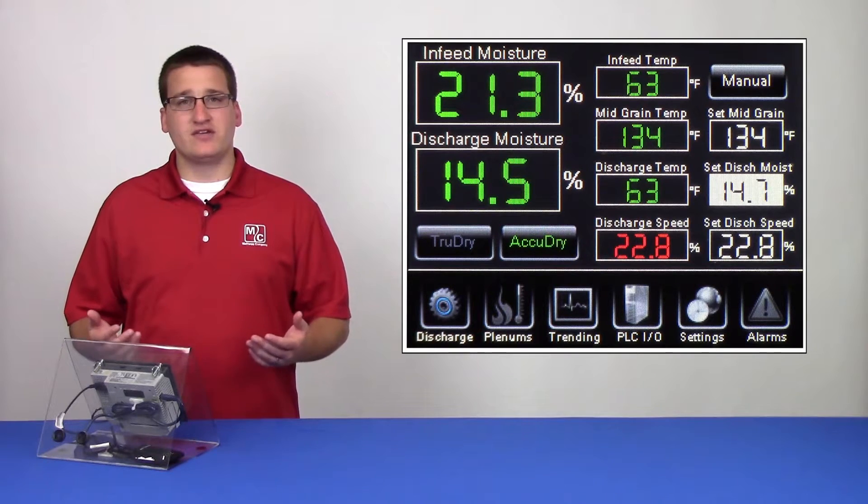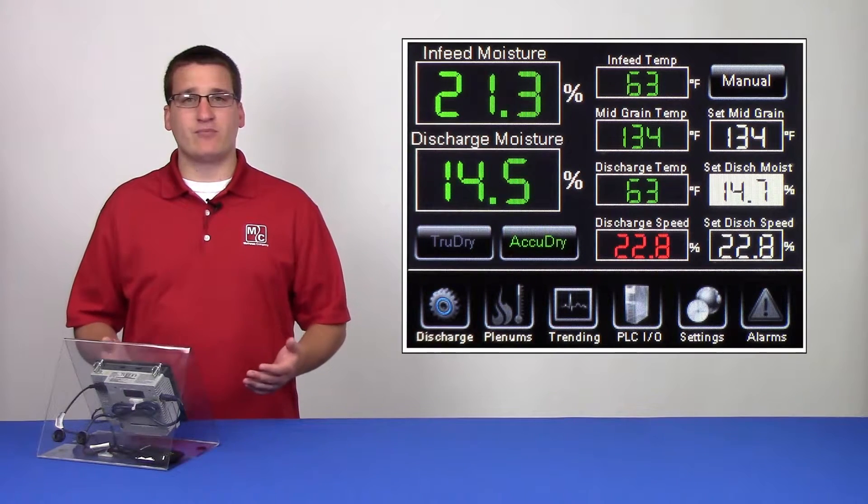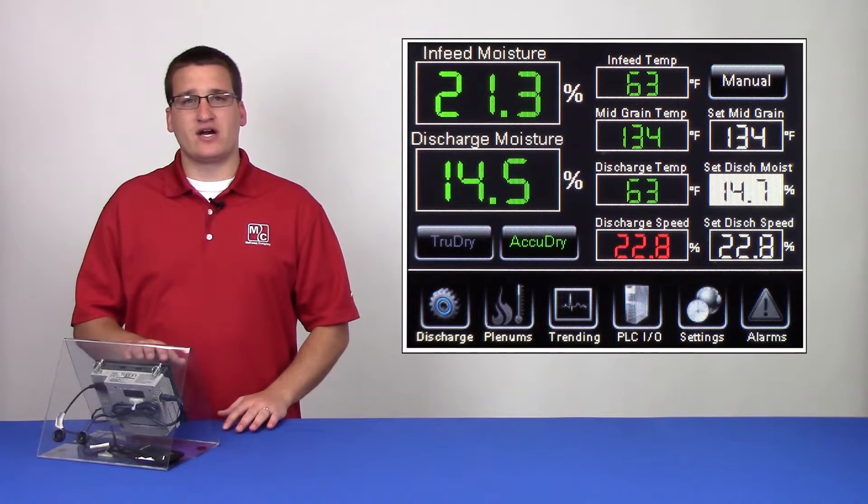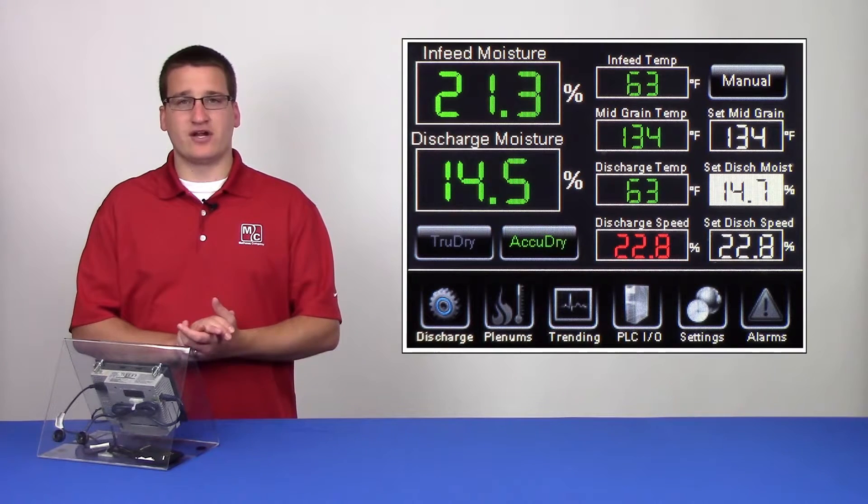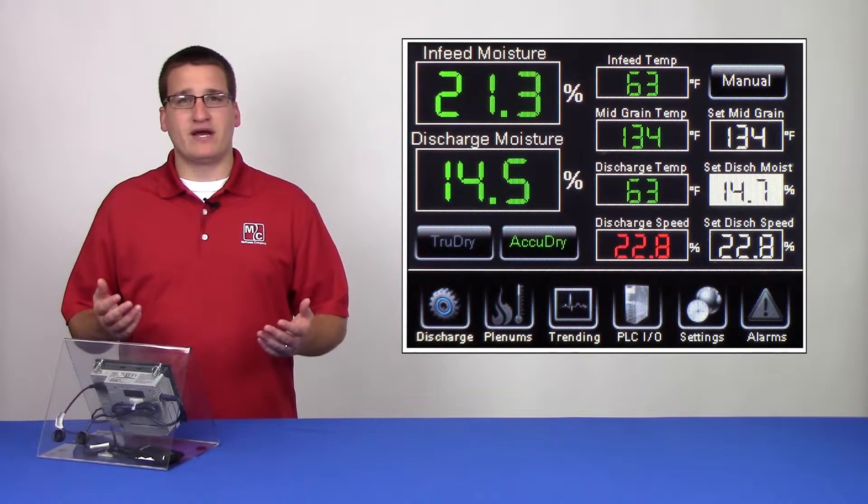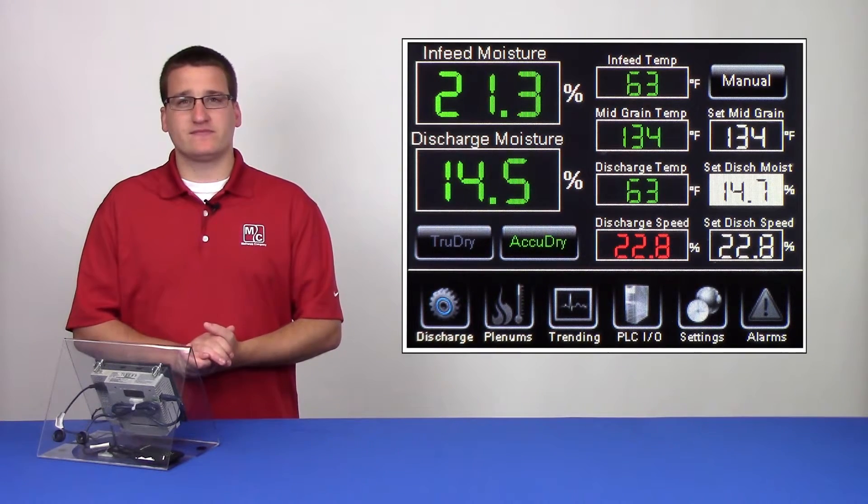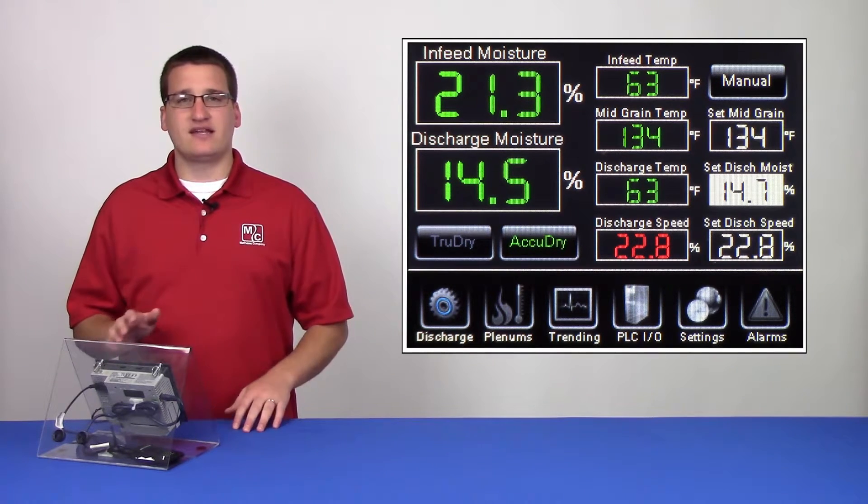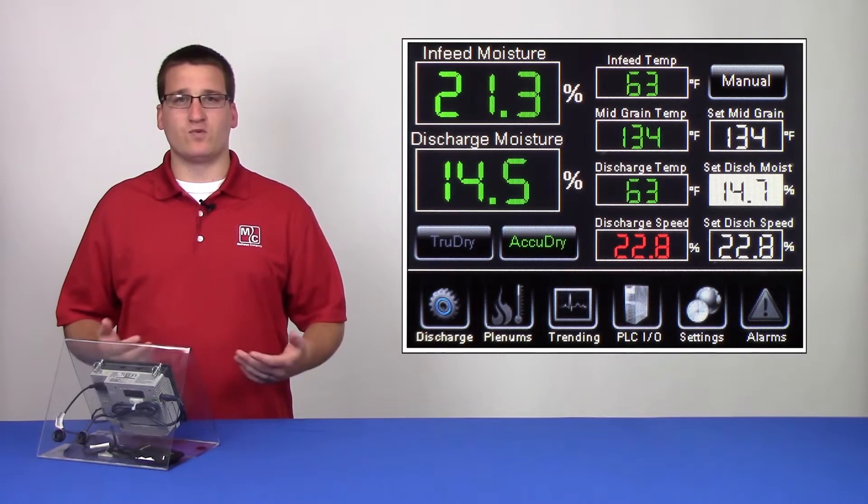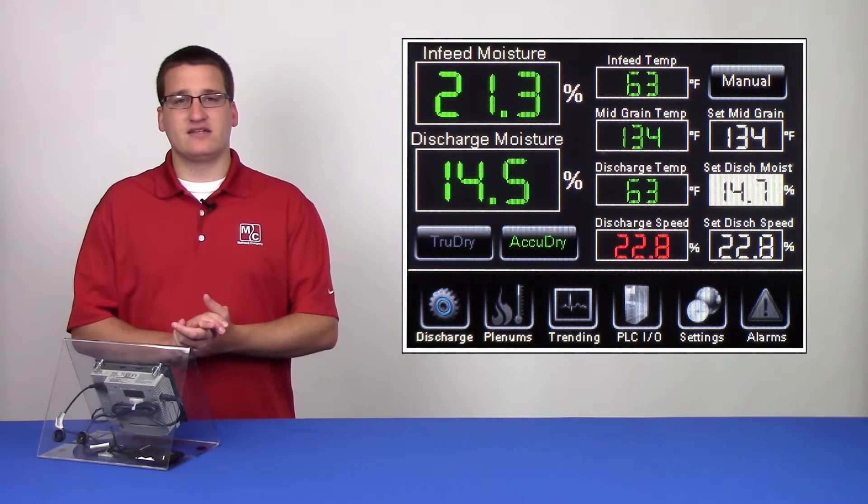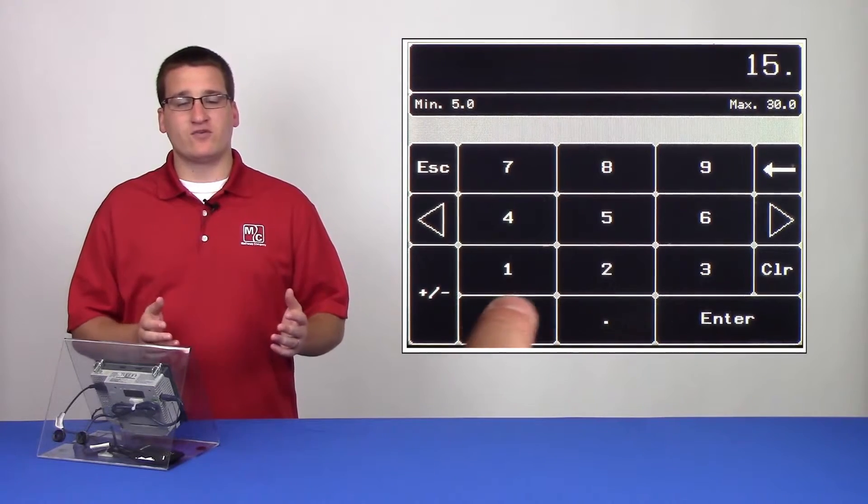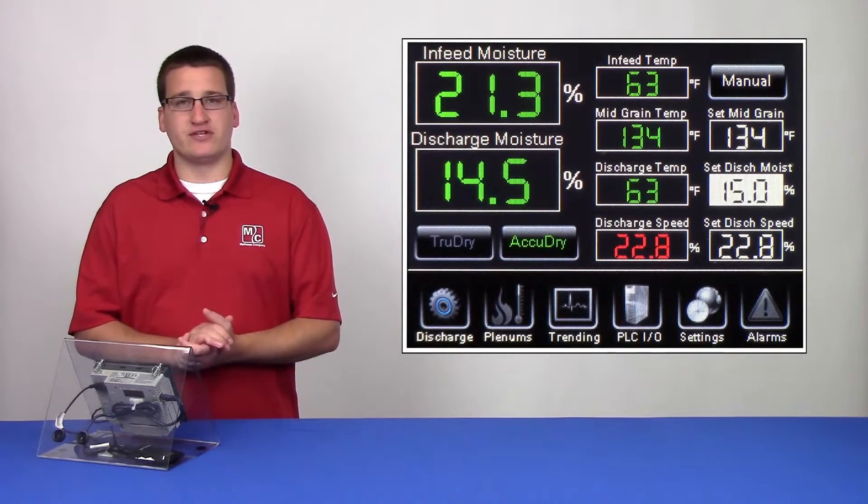From this screen, the user can also control what the operating mode of the dryer is. In this example, we can see that the dryer is currently running in AccuDry mode, indicated by a green AccuDry button. Notice that while running in AccuDry, the set discharge moisture box is white. That indicates to the user that they can tap on this box and adjust that value, and the dryer will work to maintain the number they choose.